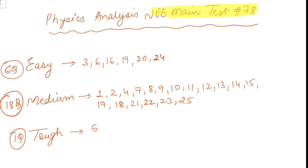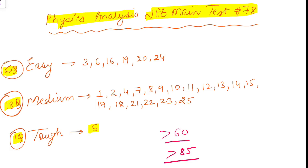Hello everyone, welcome to this session. I have just solved JEE Main Test 78 and here's the analysis of the physics section. I regarded one question as tough, 18 as medium, and six as easy. The paper was less time-taking and should be a scoring one. Anyone decent in physics should get 60 plus, and those aiming for top ranks in advanced should get 85 plus.